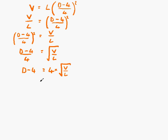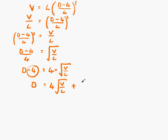What we want is D to be the subject of the formula, so our next thing to move is our minus 4. Minus 4, when we change its side, will become plus 4. That leaves us with D on the left. We already had 4 root V over L on the right hand side. The minus 4 changes side, changes sign, and becomes plus 4. So now we have D as the subject: D equals 4 root V over L plus 4. And that's our final answer.